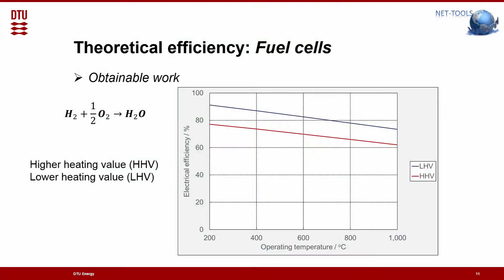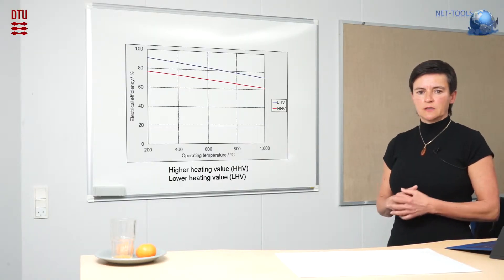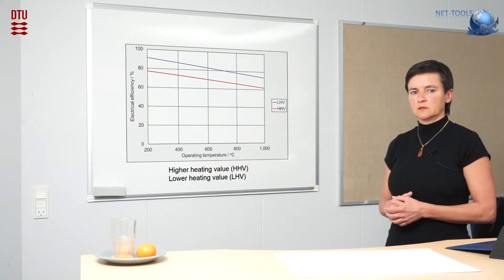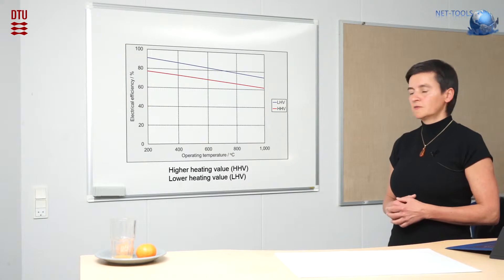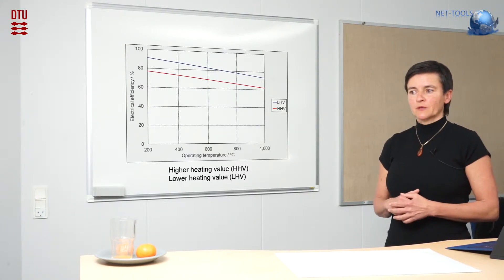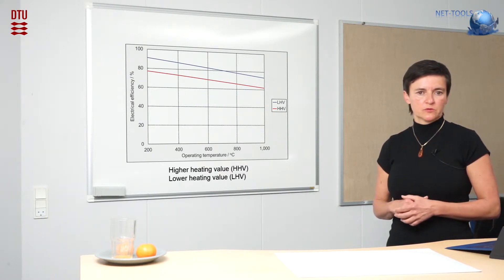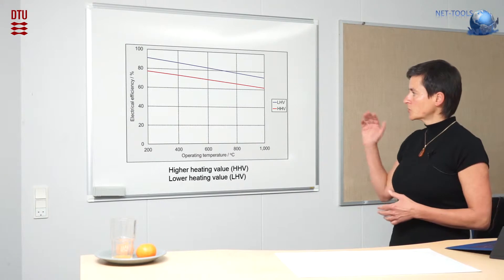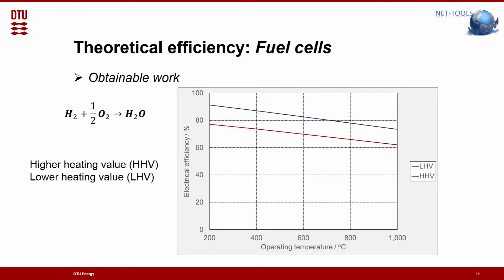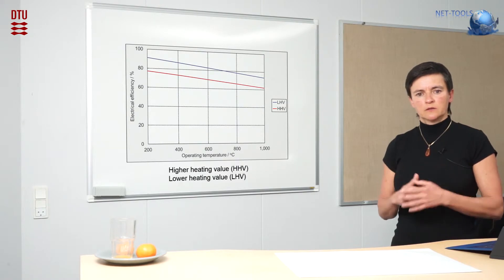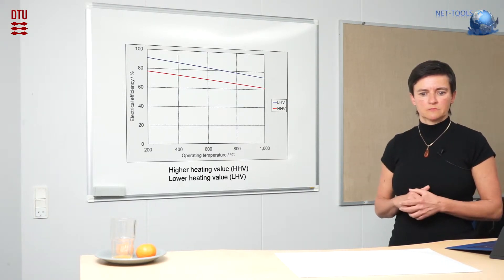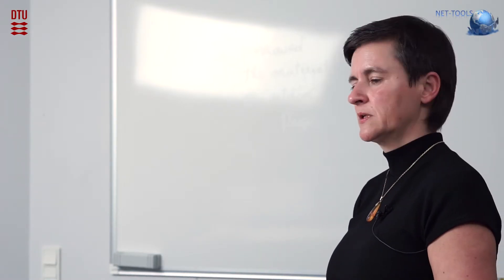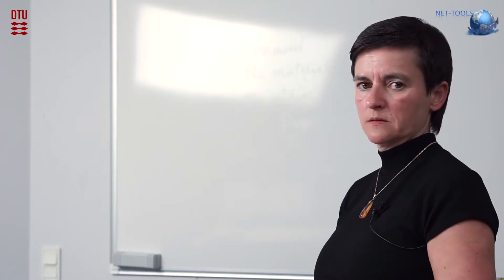If you take the simple case of the reaction of hydrogen with oxygen in a fuel cell, you obtain the curves here for efficiency versus temperature. When you remember the Carnot process, you see that high efficiencies can already be achieved at lower temperatures, which is often a good situation because all the materials involved are not exposed to very high temperatures and can often hold for longer lifetimes. There are also two curves: one related to the higher heating value and the lower heating value. The difference is that for the higher heating value, you obtain the steam in the liquid state, and for the lower heating value, you have the steam present in the vapor phase.